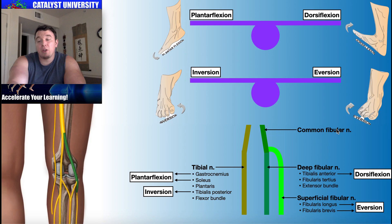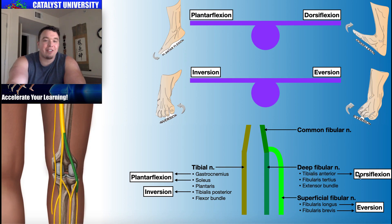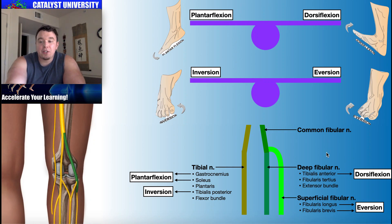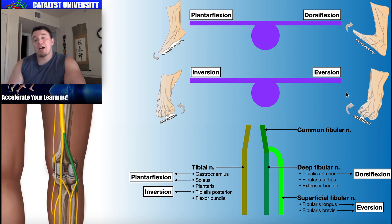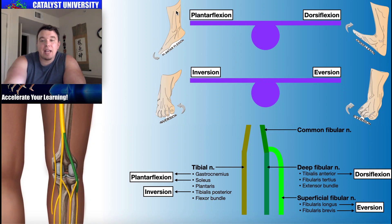The common fibular nerve, when it diverges, gives rise to the deep fibular nerve. The major muscle of interest there is the tibialis anterior, which dorsiflexes the ankle — dorsiflexion is where you take your ankle and angle it up toward your head. Dorsiflexion is the opposite of plantar flexion, and it is controlled by the deep fibular nerve. The superficial fibular nerve controls the fibularis longus and brevis, which are responsible for everting the foot. Eversion is the opposite of inversion — you take the bottom surface of your foot and angle it away from your midline, out toward the side.